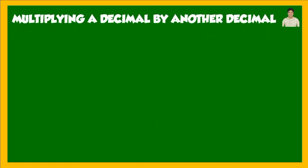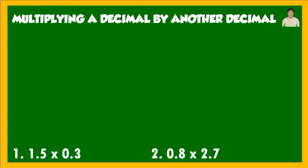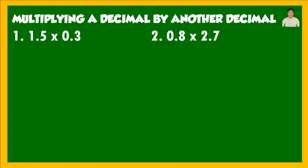Let us proceed to another topic. This time we will be multiplying a decimal by another decimal — both numbers now have a decimal point. Let's start with the first example: 1 and 5 tenths multiplied by 3 tenths, or 1.5 times 0.3.